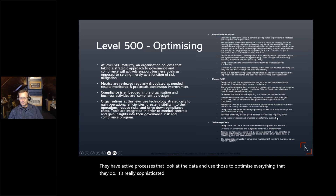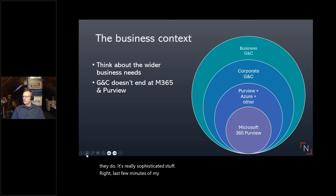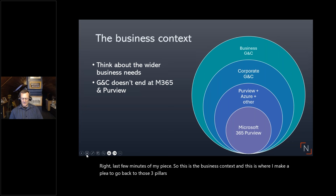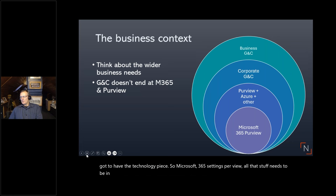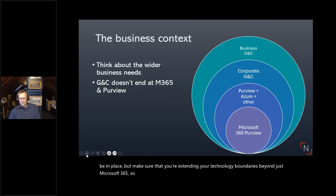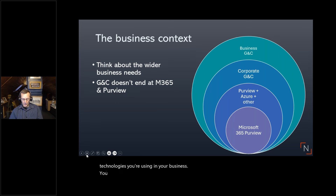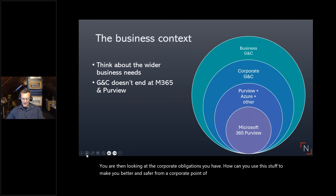This is the business context and where I make a plea to go back to those three pillars and think about the fact that it's not just about tech. You've got a technology piece — Microsoft 365 settings, Purview, all that stuff needs to be in place — but make sure you're extending your technology boundaries beyond just Microsoft 365. Wrap your technical controls around Azure and any other technologies used in your business, then look at the corporate obligations you have and take ownership of not just technical risks but business risks.